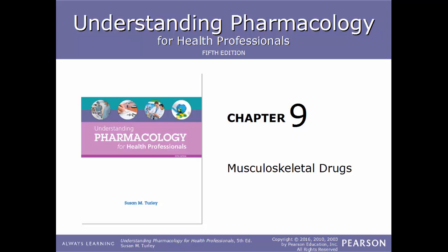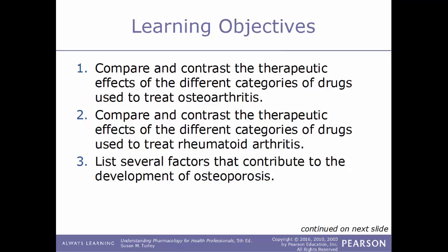Hello and welcome back to our video series on pharmacology. In this video we will continue our course on chapter number nine: musculoskeletal drugs. Learning objectives for this chapter include comparing and contrasting the therapeutic effects of different categories of drugs used to treat osteoarthritis, and comparing and contrasting the therapeutic effects of different categories of drugs used to treat rheumatoid arthritis.